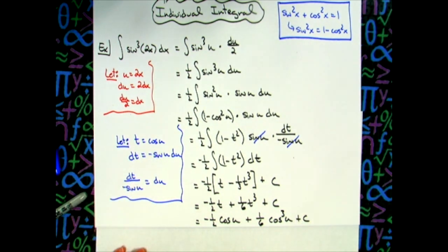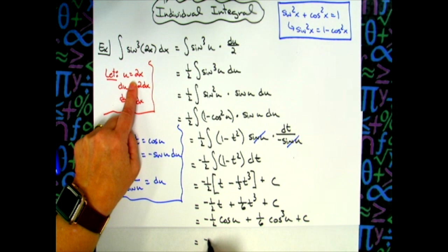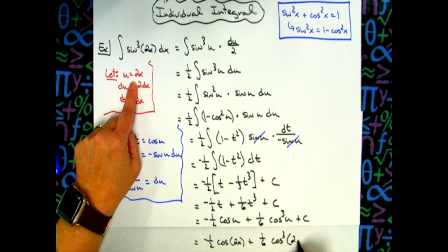Now that's in terms of u, so we have to go all the way back up to what u is, do one more substitution. So I'll have negative one half cosine of 2x plus one sixth cosine to the third of 2x, and then plus c.